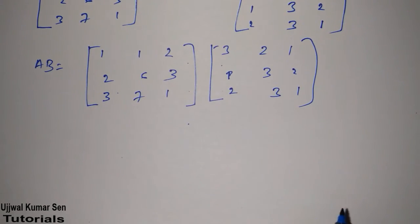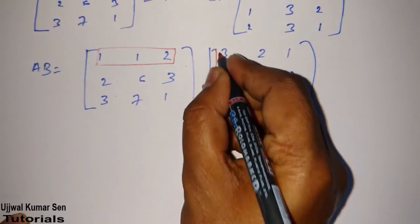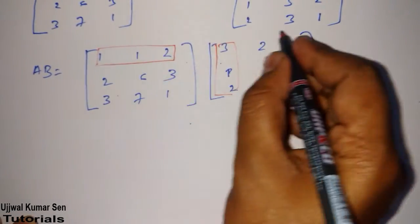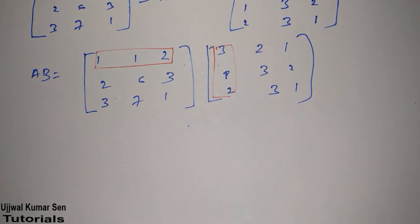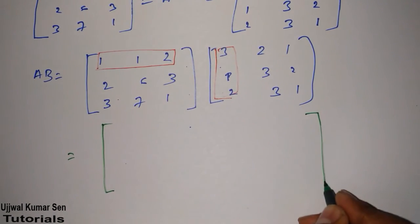We will implement the same process. What we will do? We will choose the row and column. Then row and column. Then row and column. We will go on the same process, right? Now, first of all, make a matrix like this.